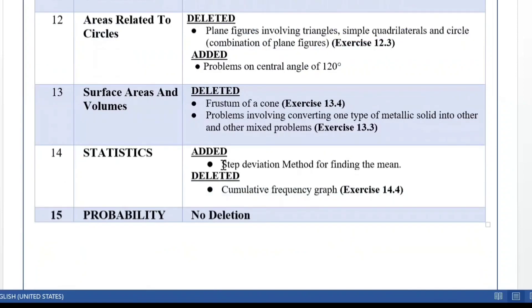In Statistics, the step deviation method, which was not there earlier, has been added. What is deleted is the cumulative frequency graph — the ogive was not there last time either. So questions on construction of ogives will not be asked, but the median can be asked. In the Probability chapter, there is no deletion.